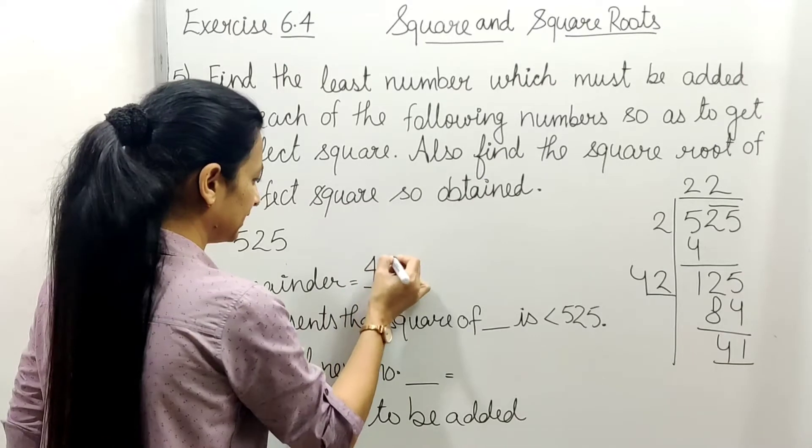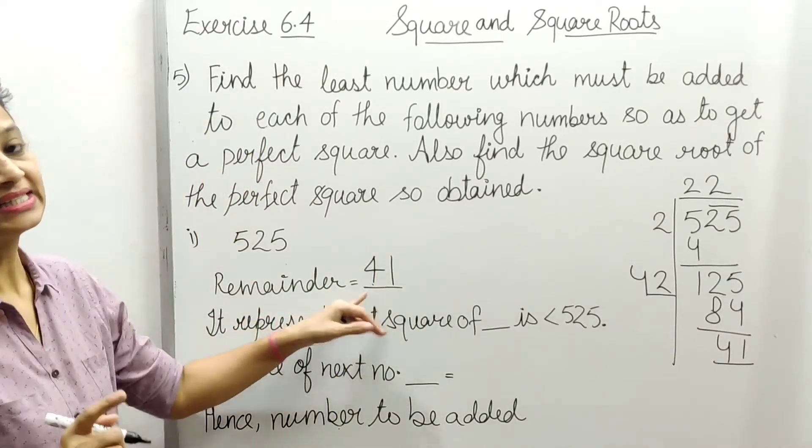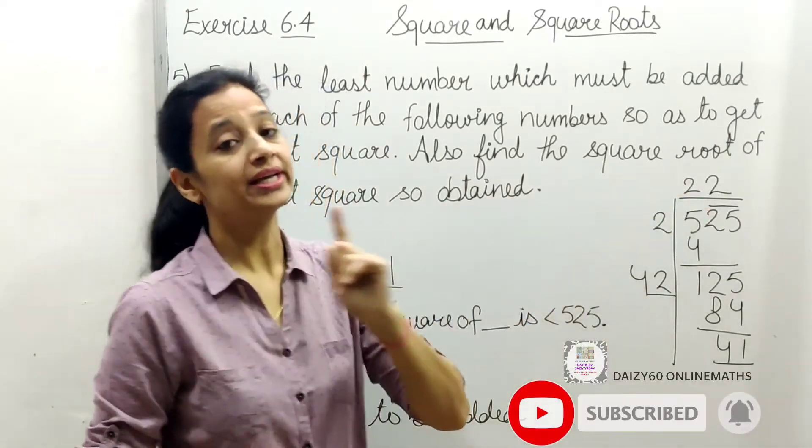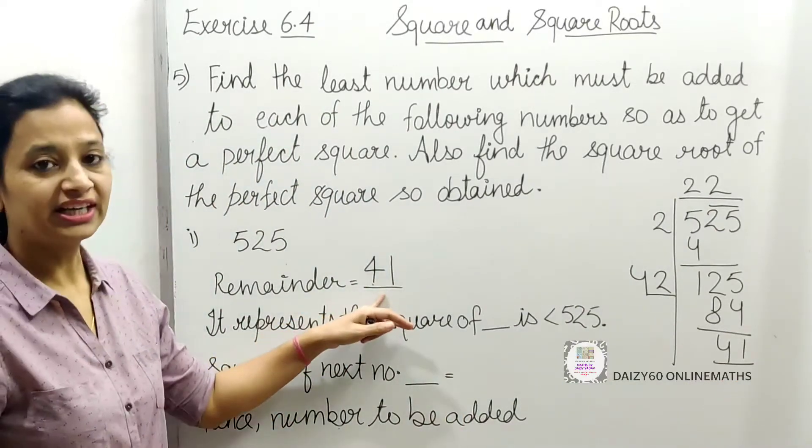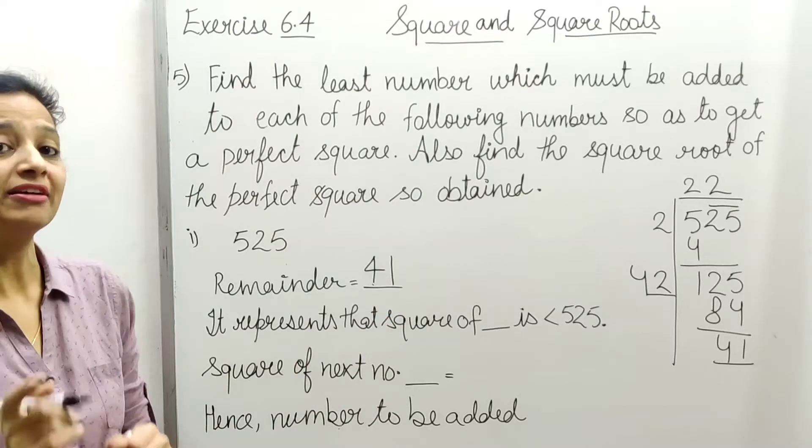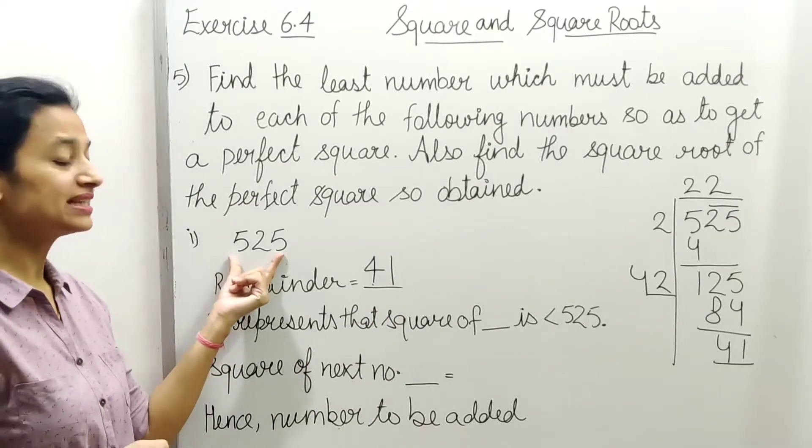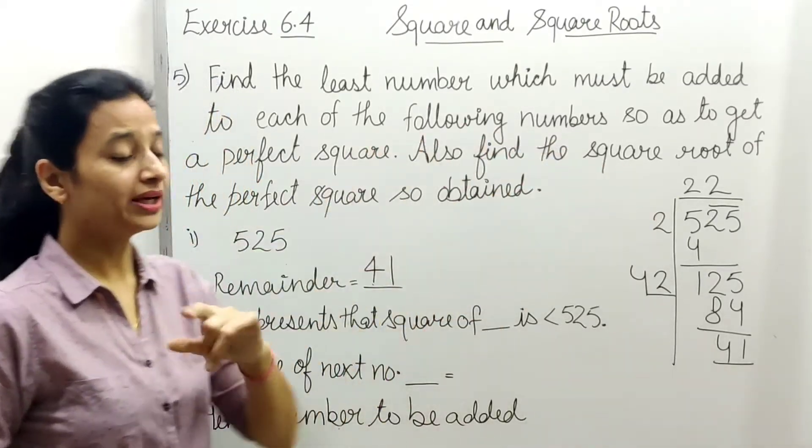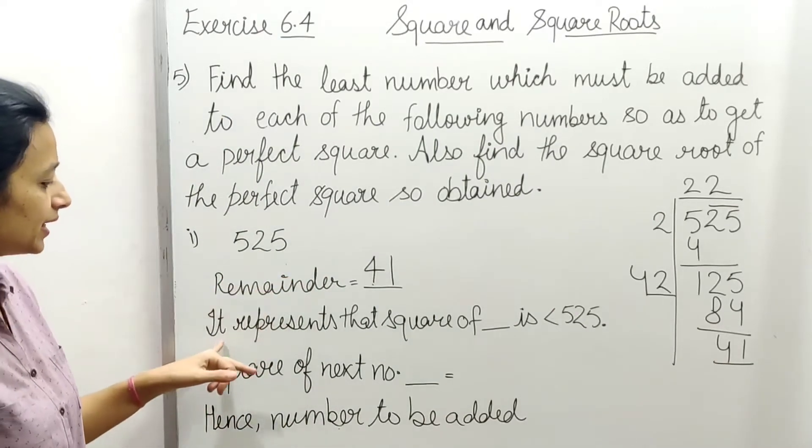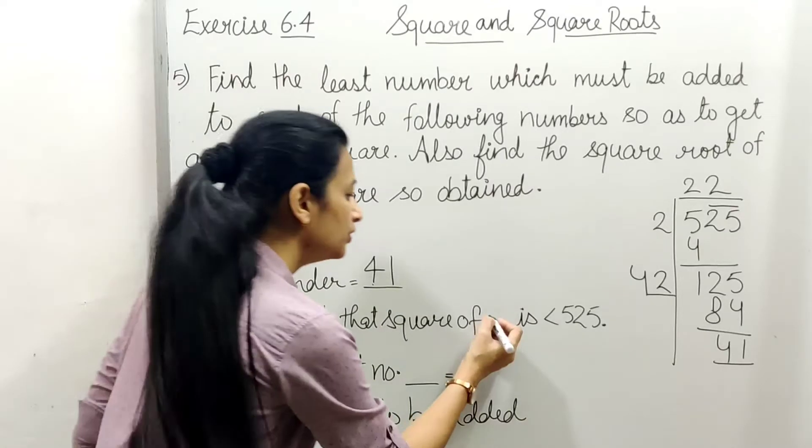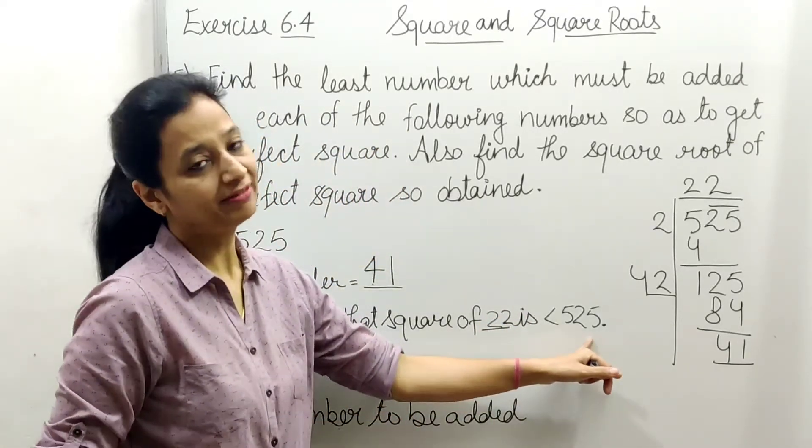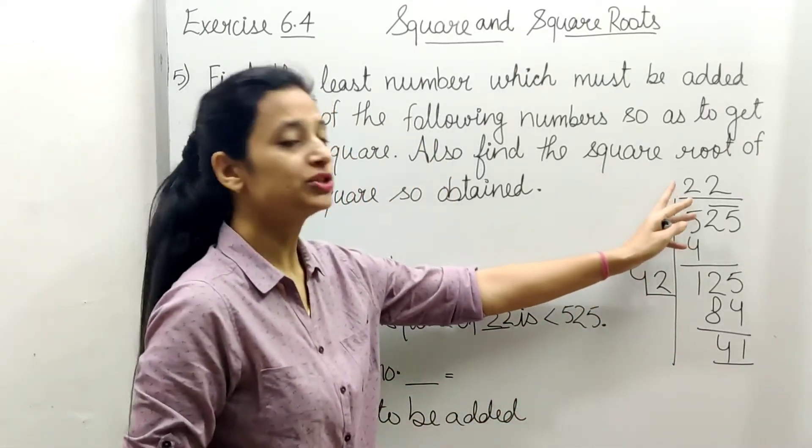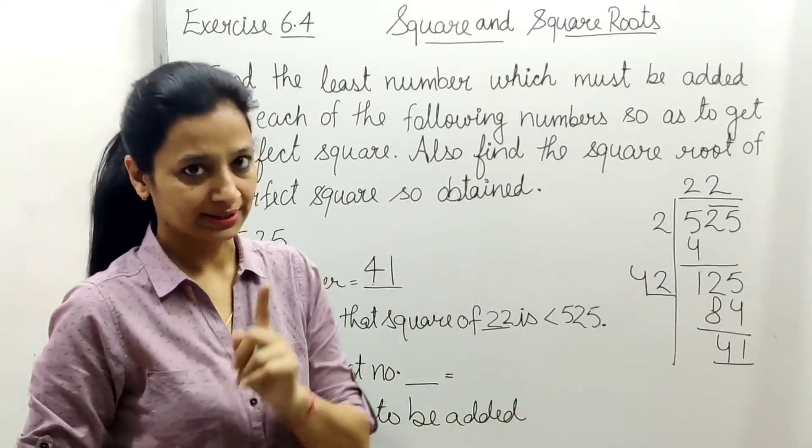We could do 43 but 43×3 would be too large. So we'll do 2 times: 2, 2×4=8, 42×2=84. Minus gives remainder 41. Remainder is 41. This shows that this number is 41 more than 22 squared.